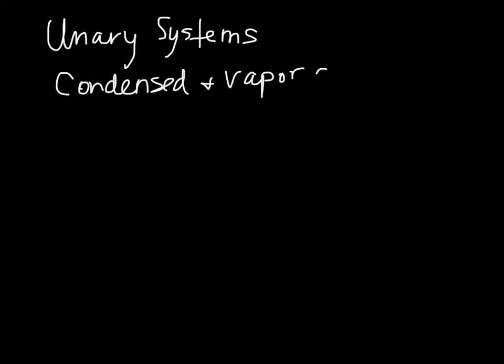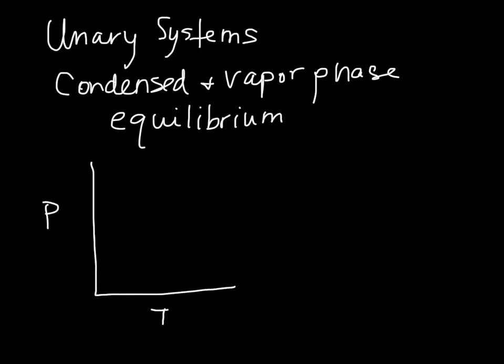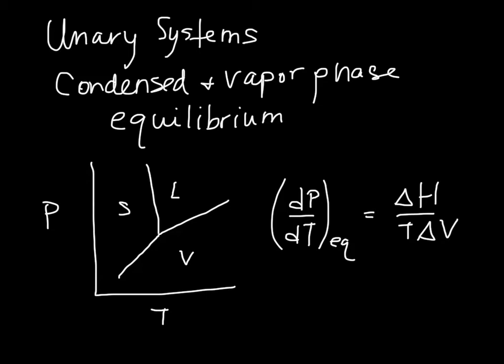Let's consider in a unary system the equilibrium between the condensed and vapor phases. So we know for a unary system that we can have a phase diagram which more or less looks like this, with the solid, the liquid, and the vapor phases, and that the slopes of the coexistence curves, or these lines on the phase diagram, is given by this relationship here. So this is general, and this would describe any of these lines on this phase diagram.